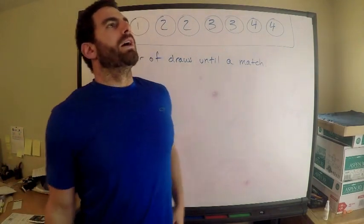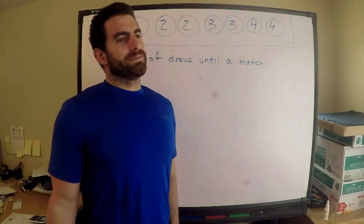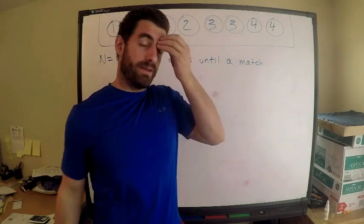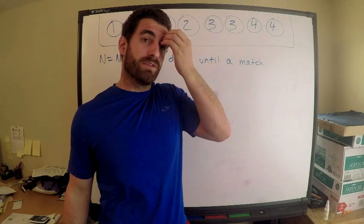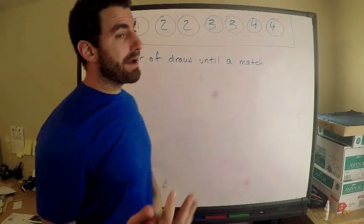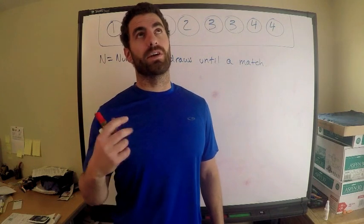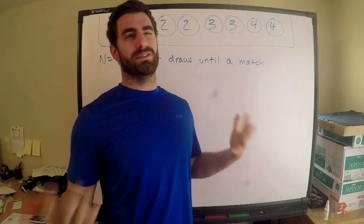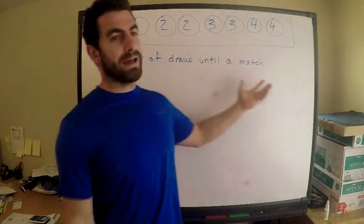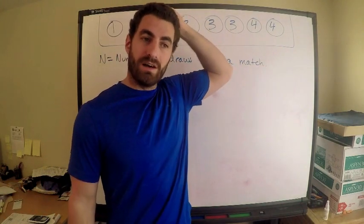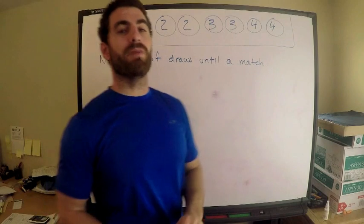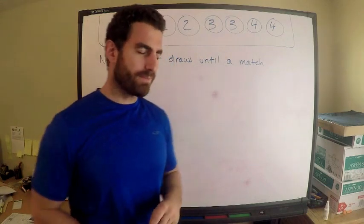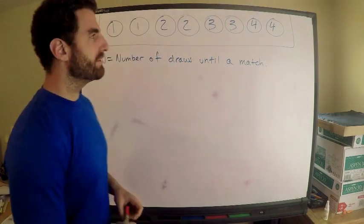The first thing you want to realize is that each trial is not independent of the previous — they're not independent. So I cannot resort to something like geometric, where I'm thinking probability of success where success is getting a match. Geometric requires independent trials, so that won't work. The only thing you could possibly use is hypergeometric, since you don't need independence for that, but I haven't found a way to apply it here.